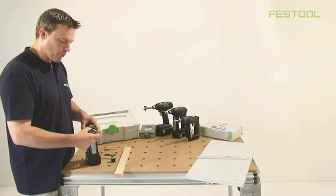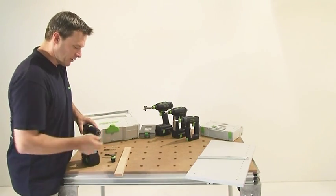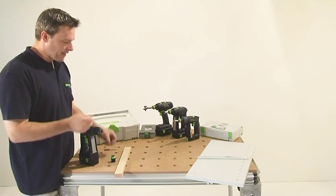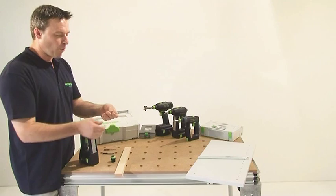The normal chuck is simply put on through a FastFix system. Then I have a standard drill here, which I clamp and tighten.